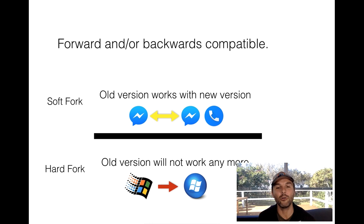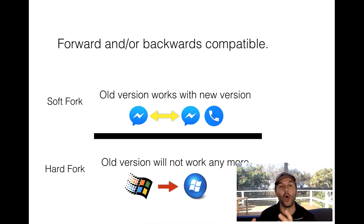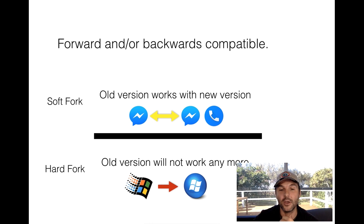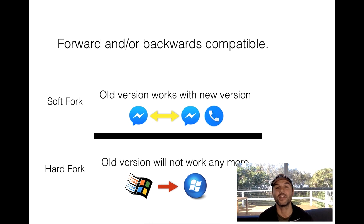A hard fork basically means the old version will not work anymore. A good example would be Windows. If you write a new Word document in the latest version and send it to someone who hasn't updated their Microsoft Office for 10 or 15 years, they actually won't be able to open that document written on the new software — it's not backwards compatible. With a soft fork, it takes a lot less organizing for the community because they can kind of do it gradually, but with a hard fork, everyone has to be involved and they've all got to do it at the same time, so there's a lot more organizing and more risks.